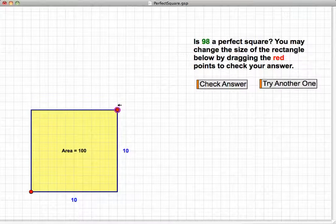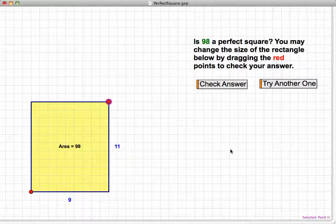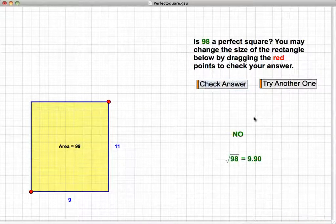But they'll find in this case that they cannot get 98. And so hopefully their guess is that it is not a perfect square. They can check their answer. In fact, it checks out that it's not a perfect square.